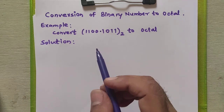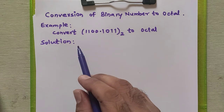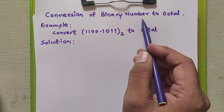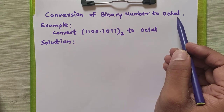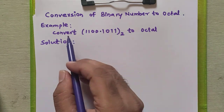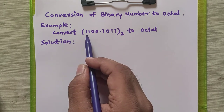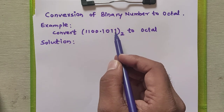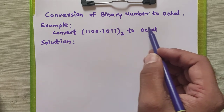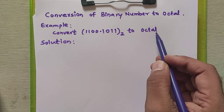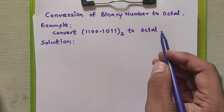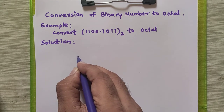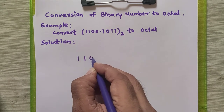Hello everyone. In this tutorial we will study how to convert a given binary number to octal number. In this example, 1100.1010 binary will be converted into octal. First of all, we will write the given number as it is in the solution part.